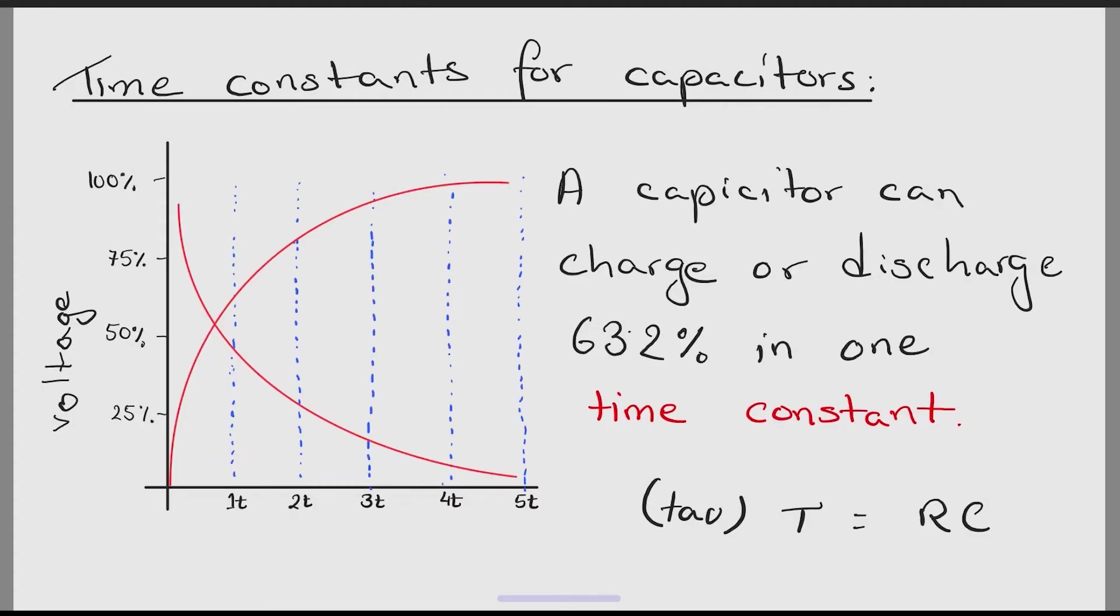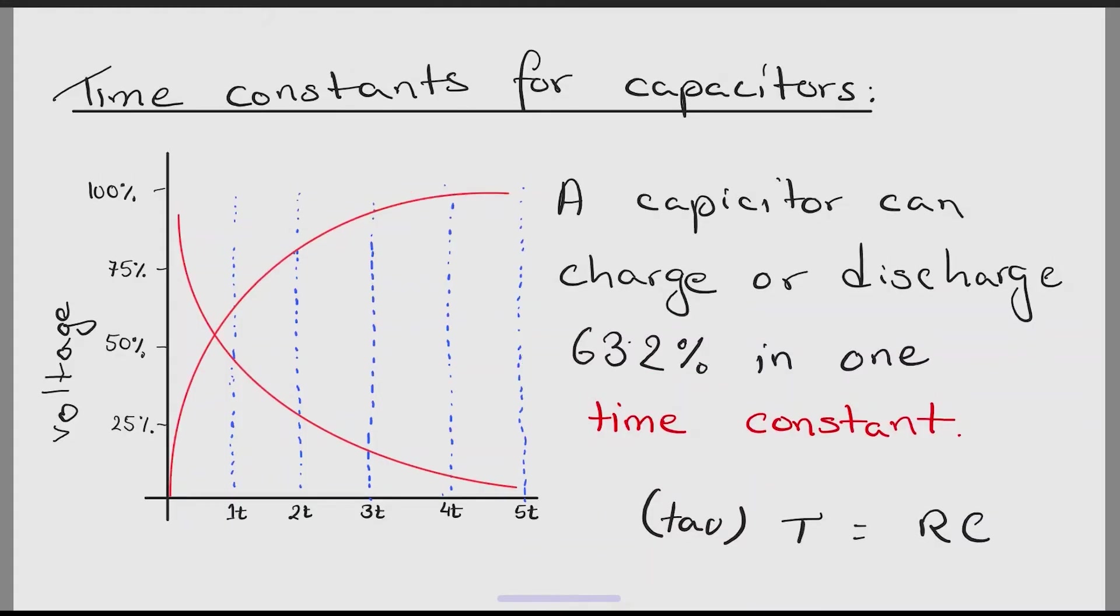Time constants are a very important concept for capacitors. Any capacitor can charge and discharge very fast. During the initial stages, they can discharge or charge 63.2%. The time it takes for the capacitor to charge or discharge 63.2% is called one time constant. Time constants are denoted by tau. Here you can see the graph reaches 63.2% in the first time constant which is 1T. A capacitor will always reach 99% at 5 tau or we can say 5 time constants.